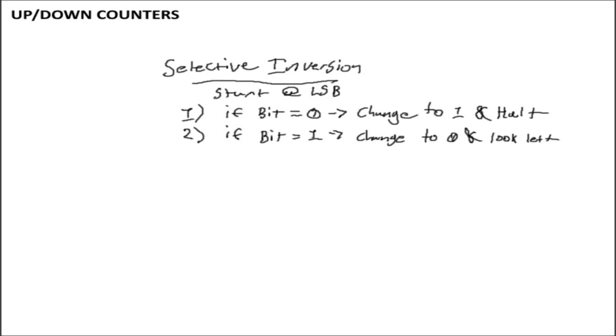It's a pretty simple algorithm. Basically, for any string of bits, you start at the least significant bit, which is the smallest bit. And then you follow one of two rules. Rule number one is if the bit is equal to zero, you change it to one and halt. And rule number two is if the bit is equal to one, you change it to zero and look left.